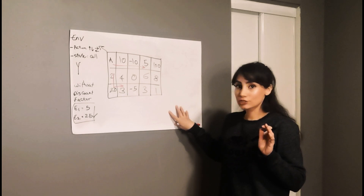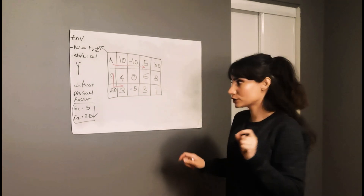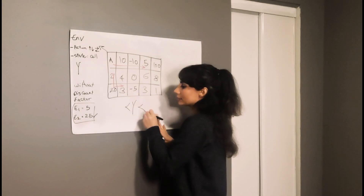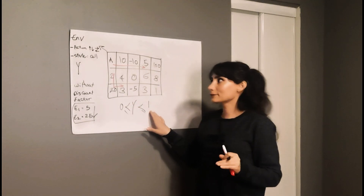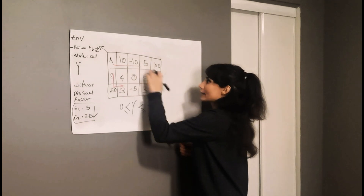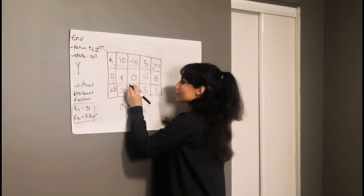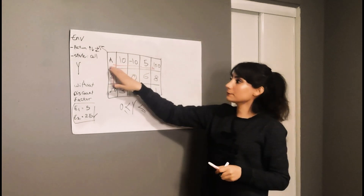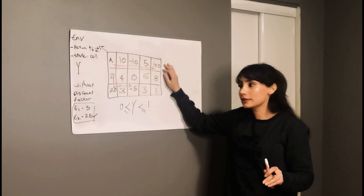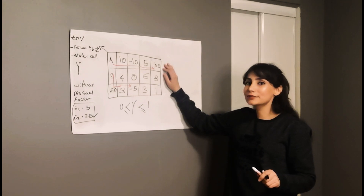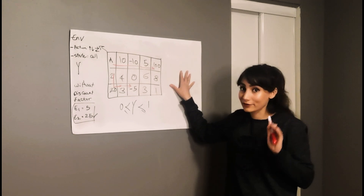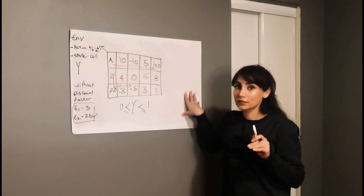Now let's talk about discount factor. Discount factor is a number we choose between 0 and 1 — that's your gamma. What discount factor does is account for uncertainty: when my agent is moving toward a cell with a reward of 100, there's a chance that 100 might not be there anymore. So I want to give a discount to it — don't count on it as much.